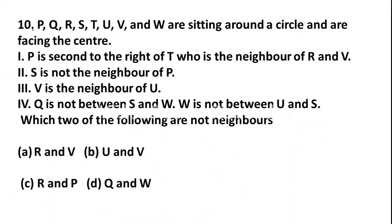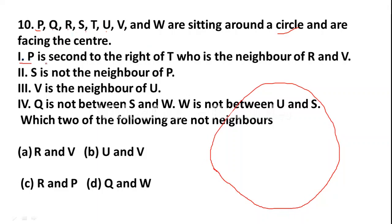Question 10: P, Q, R, S, T, U, V, and W are sitting around a circle facing the center. P is the second to the right of T. P is the neighbor of R and V. V is the neighbor of U. We will arrange them in a circle: place T, then P is second to T's right.